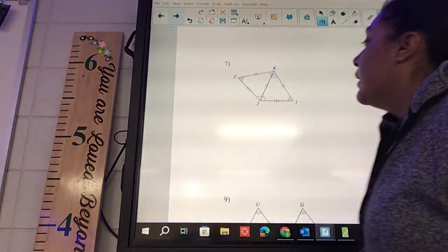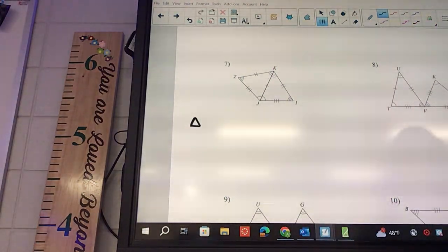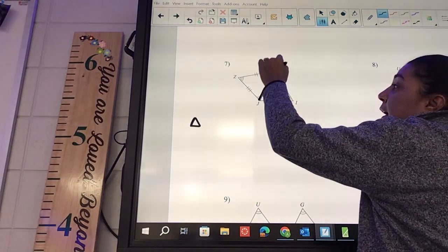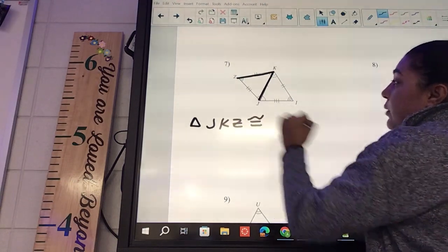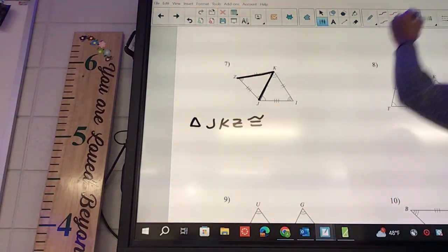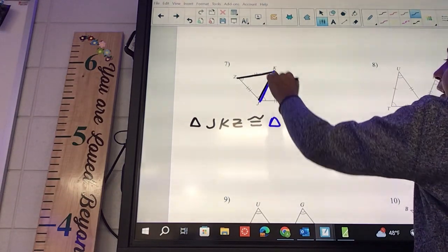Seven - I got triangle. It's going to be JKZ is congruent to triangle JKI.